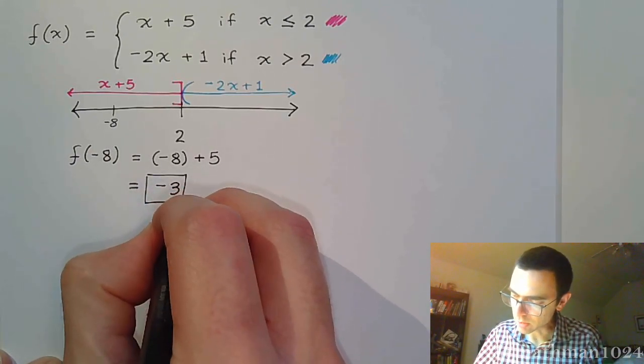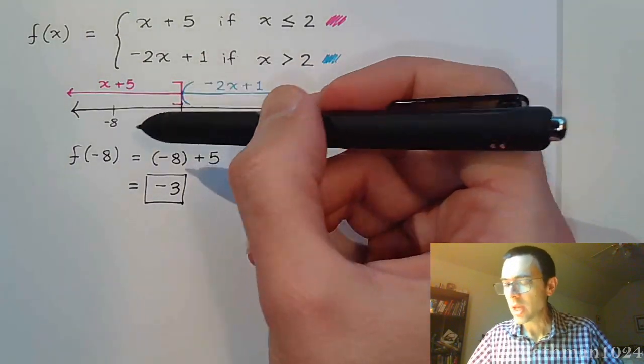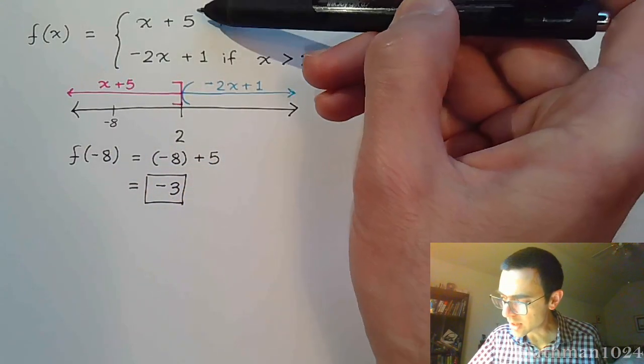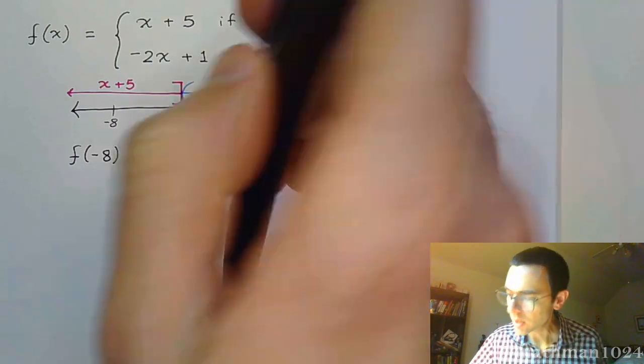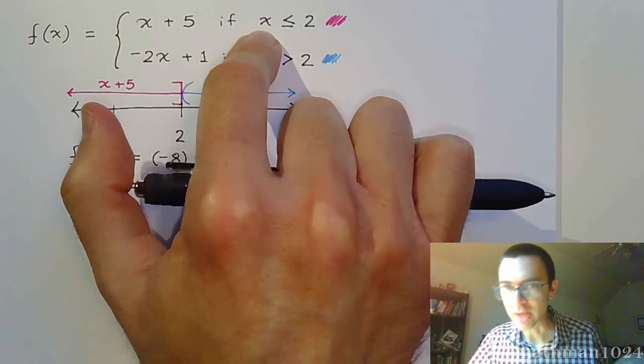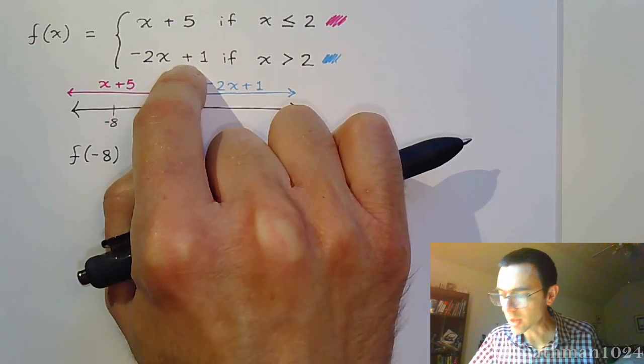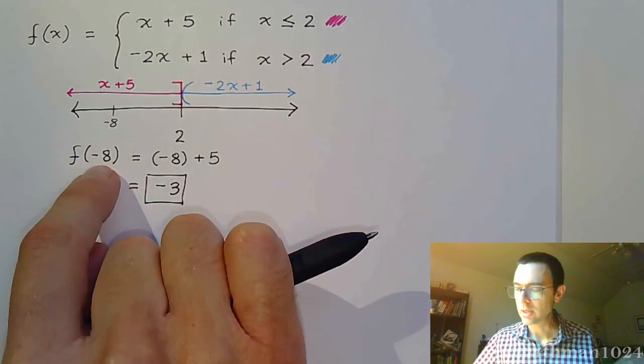Now you might ask, wait, wait, shouldn't I plug it into here? And the answer is no. Each value that you plug into a function, you get one output value, and so you have to find which of these pieces will accept -8. See, this first part will accept values of x that are less than or equal to 2. The second part will accept values of x, your input values, that are greater than 2. So since -8 satisfies this condition, you plug it into that part.